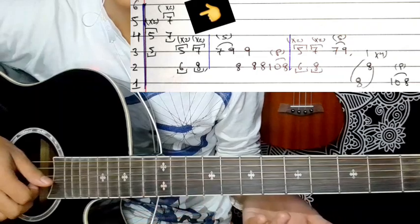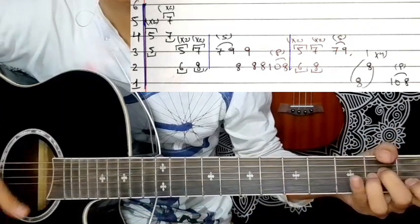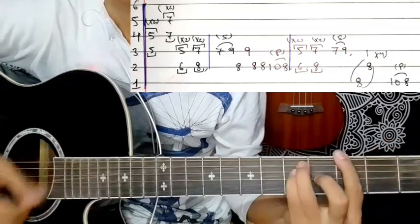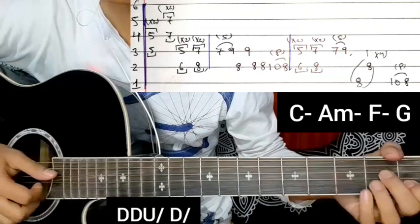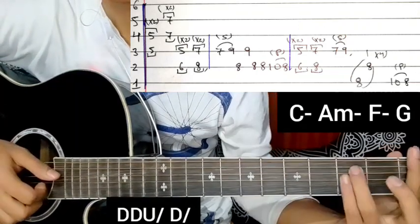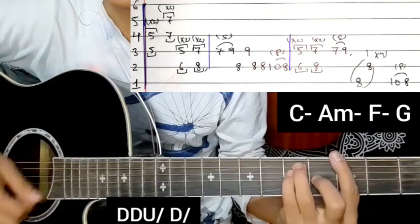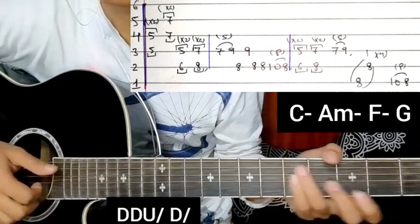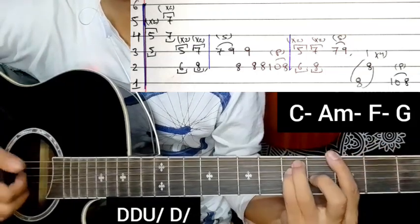For the rhythm, I'll show you the strumming pattern. It's down, down, block, down, down, block. The chords are C major, A minor, F major, and G major.